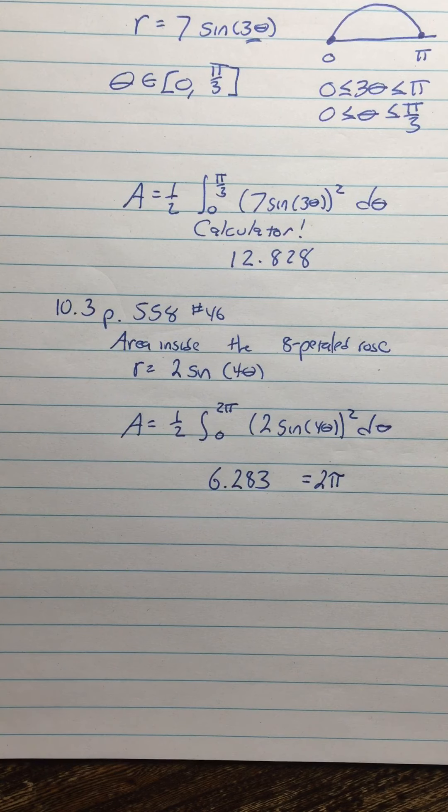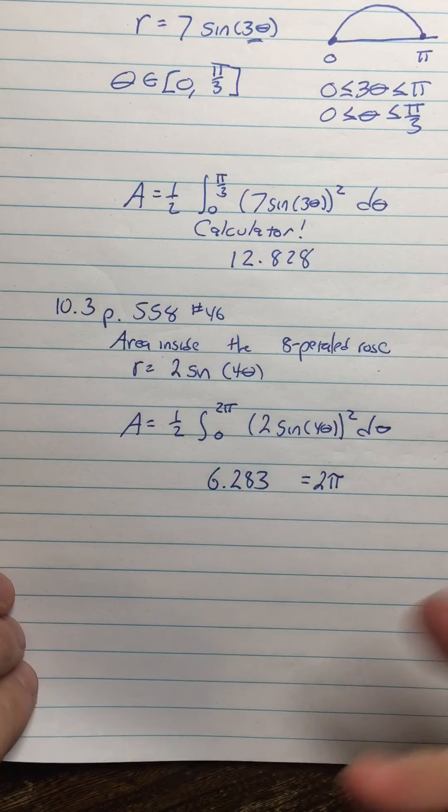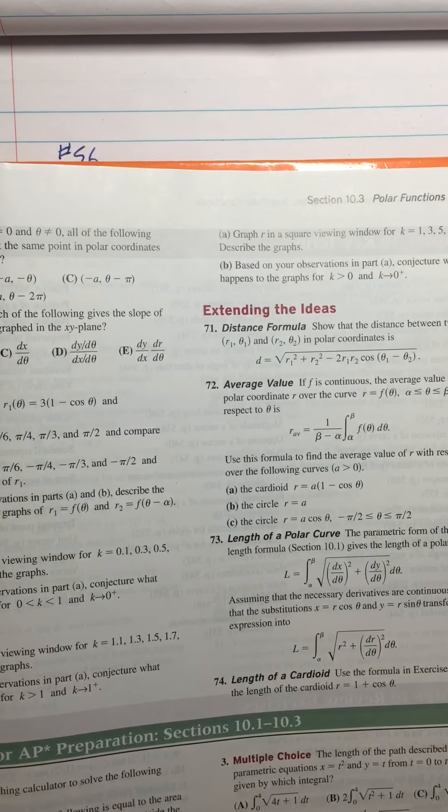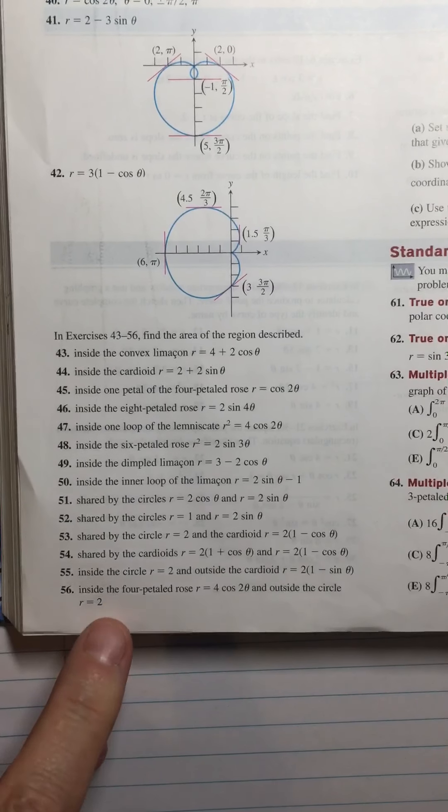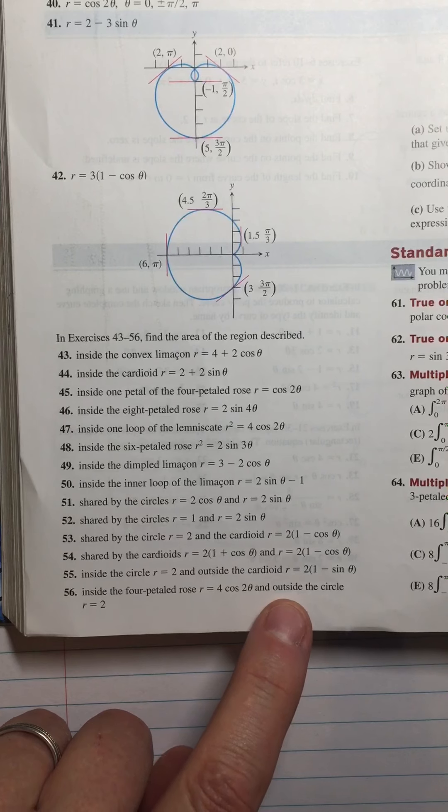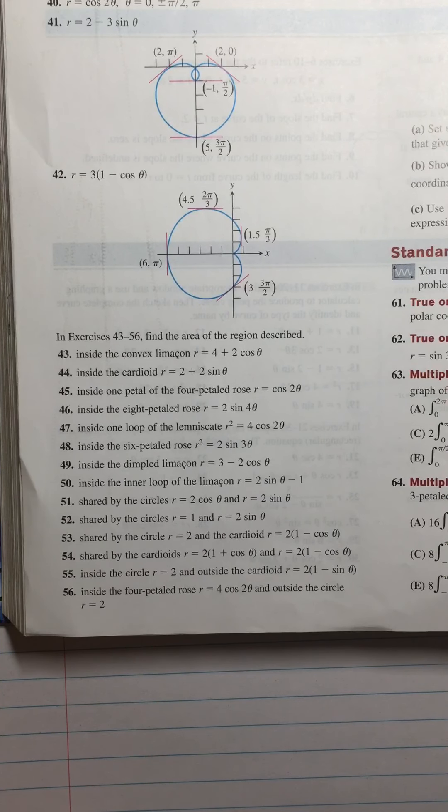Let's look at number 56 because now they start to get more complicated. Number 56 says inside the four-pedaled rose r equals 4 cosine 2 theta and outside the circle r equals 2.